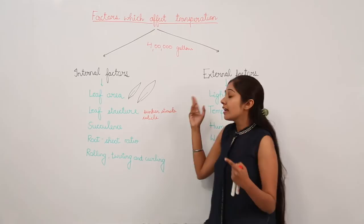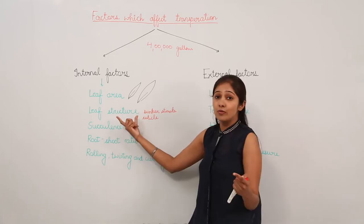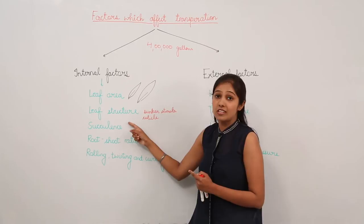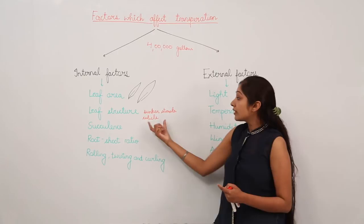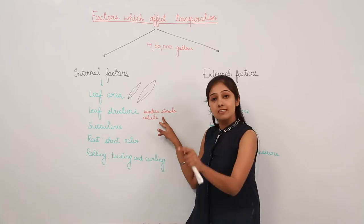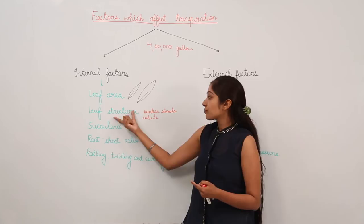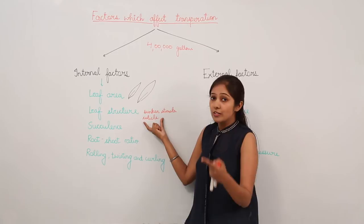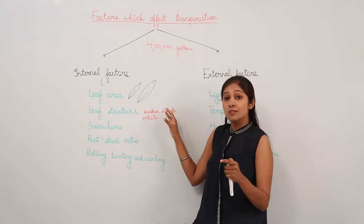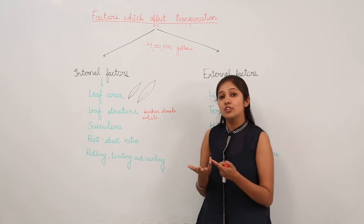Sunken stomata or a lower number of stomata in the leaf structure will reduce the rate of transpiration. Leaf structure is one of the most important internal factors affecting transpiration. For example, the cuticle layer is thick in desert plants — xerophytic plants — because they need a thick cuticle to avoid water loss due to scarcity of water. If the cuticle layer is thick, the transpiration rate will be quite low. If we have sunken stomata or fewer stomata, the transpiration rate will also be reduced to a greater extent.